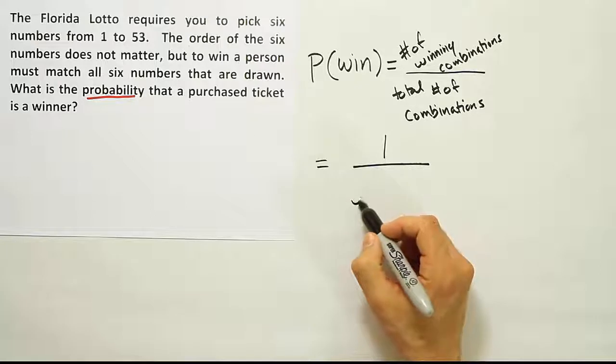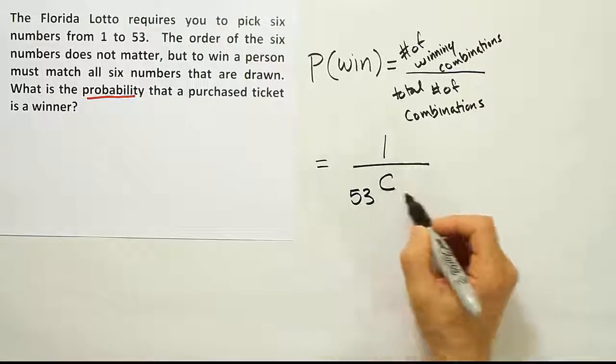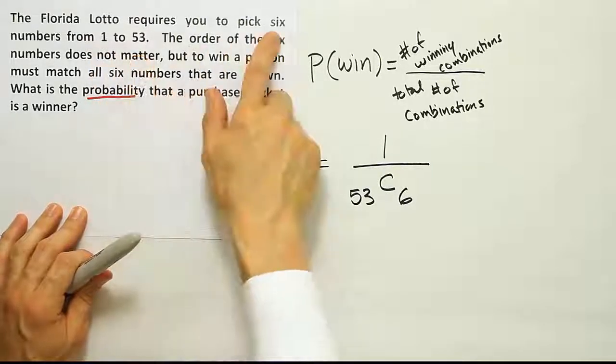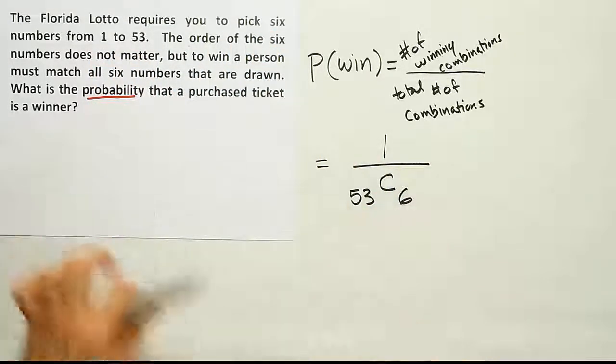So that means I can do 53 choose 6. That basically should give me the solution. There are 53 numbers to choose from. I have to choose six numbers. If I work this out, I should have my answer.